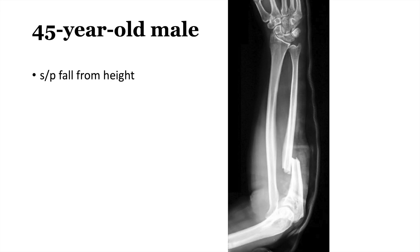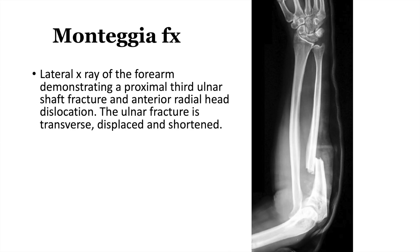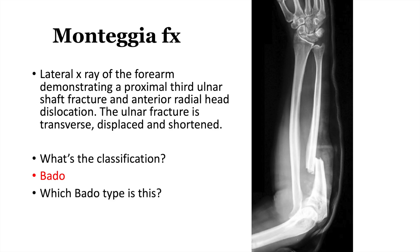Next: 45-year-old male fell from height. This is a Monteggia fracture. In real life, you'd say: this is a lateral x-ray of the forearm demonstrating a proximal third ulnar shaft fracture and anterior radial head dislocation; the ulnar fracture is transverse, displaced, and shortened. The classification for Monteggia fractures is the Bado classification. Using the mnemonic 'bad apple' — A-P-L-E: anterior, posterior, lateral, and everything — this is a type one because of the anterior radial head dislocation.